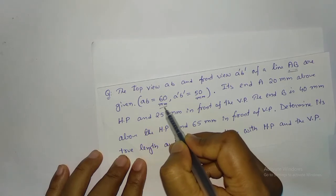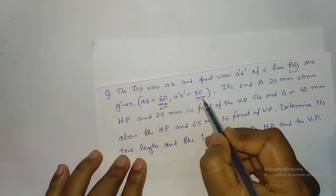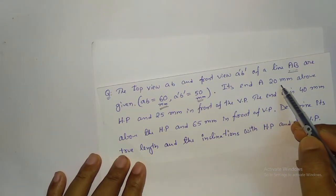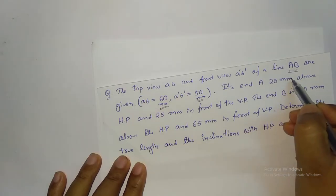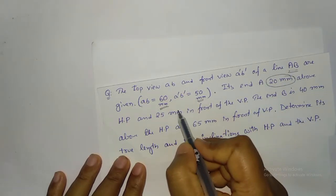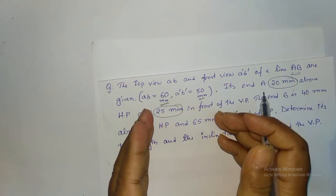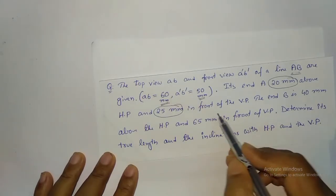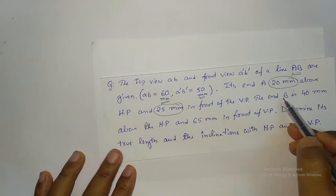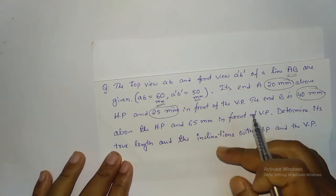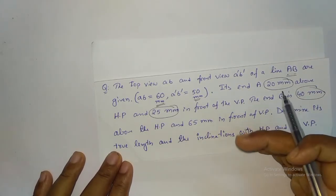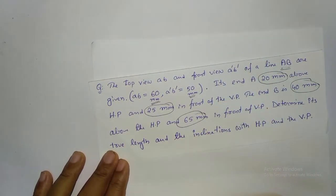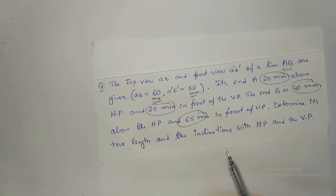End A is 20mm above HP and 25mm in front of VP — so on the left side, 20mm above XY and 25mm below XY. End B is 40mm above HP — on the right-hand side, 40mm above XY and 65mm below XY.